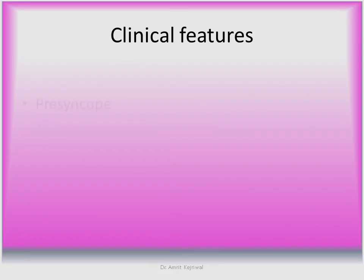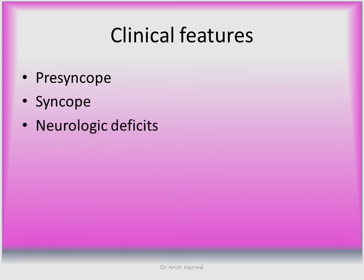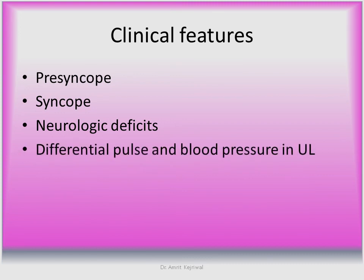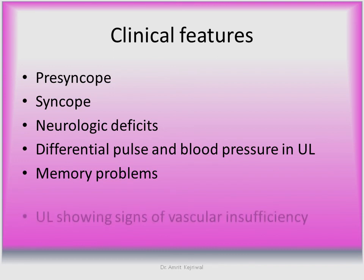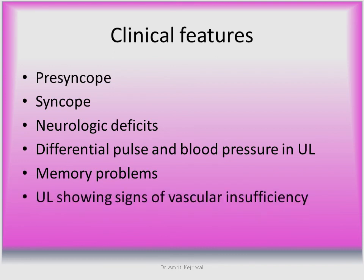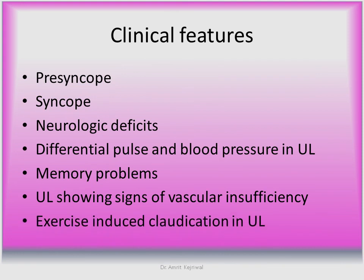Coming to the clinical features. Due to decreased blood supply to the brain, the patient can develop presyncope, syncope, or neurological deficits. There can be differential pulse and blood pressure in the upper limbs. The patient may have memory problems. The upper limb shows signs of vascular insufficiency and exercise-induced claudication on the affected side.